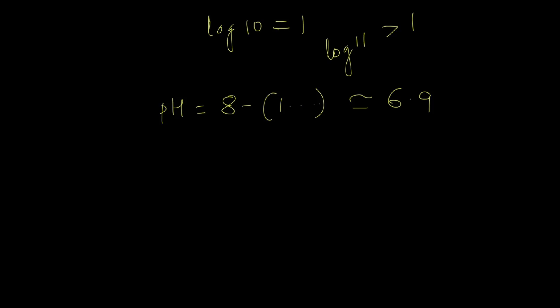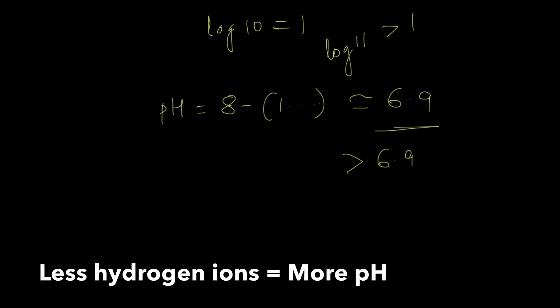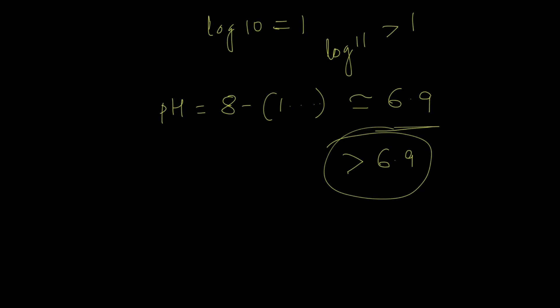Now here comes the important part. Since we know that water actually produces less H+ than 10 to the power minus 7, we should pick the answer which is slightly greater than 6.9. So in your options you should select the answer which is slightly greater than 6.9. And that is how you calculate the pH of 10 to the power minus 8 M HCl.